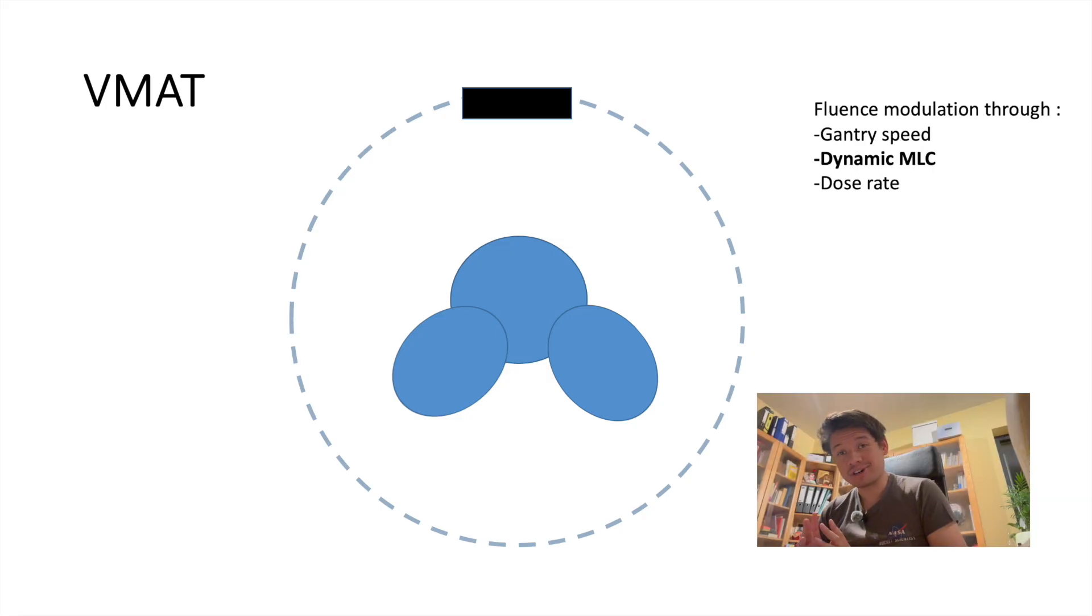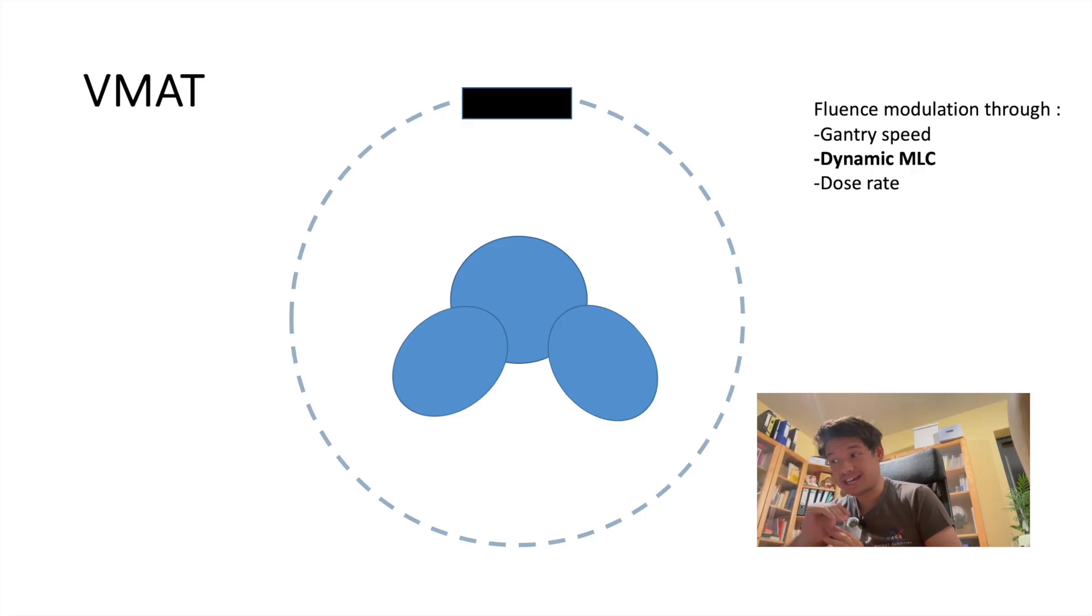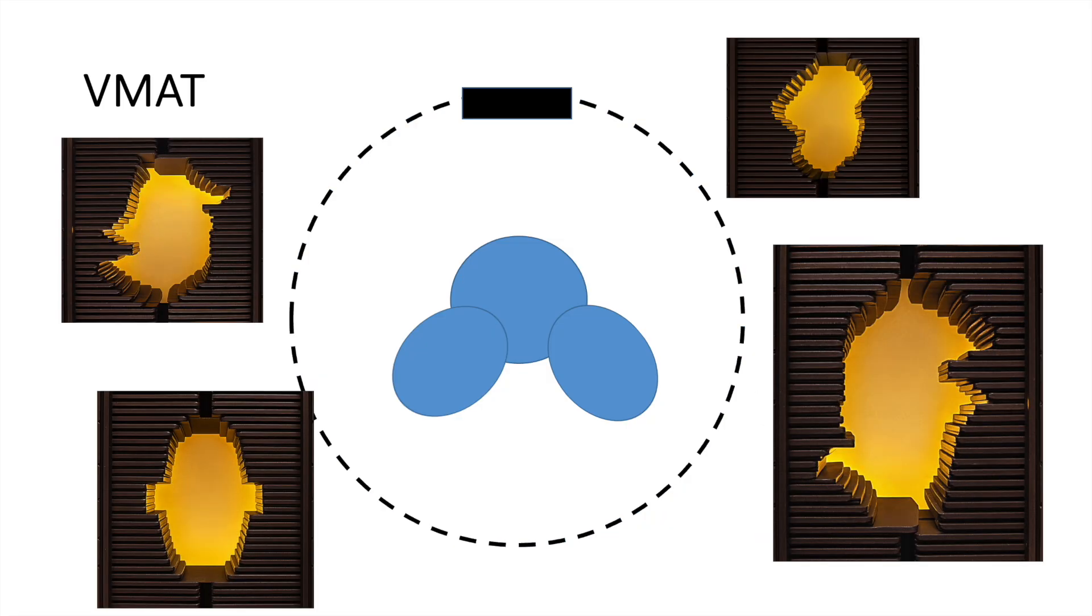As in IMRT, sliding window IMRT, dynamic MLCs move during irradiation, shaping the beam and creating a non-uniform fluence. During rotation, the beam shape is never the same. The MLC adjusts at every angle to sculpt the dose precisely.